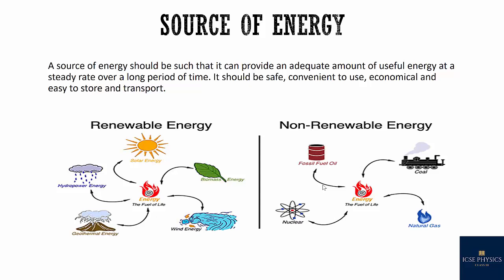Sources of energy can also be divided into renewable and non-renewable. Renewable is a natural source providing us energy continuously — it's called renewable or non-conventional source of energy. The non-renewable source is a source of energy which has been accumulated in nature over a very long period and cannot be quickly replaced when exhausted — these are called non-renewable or conventional sources of energy.